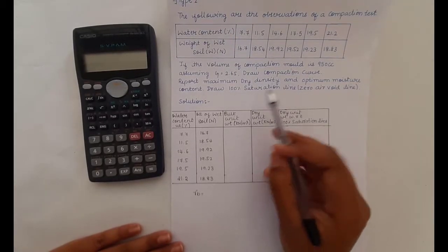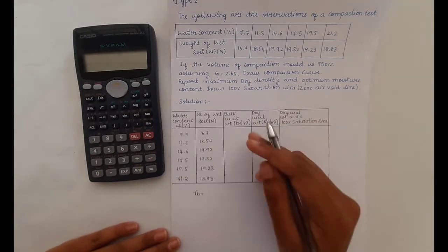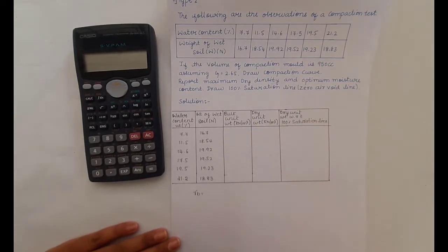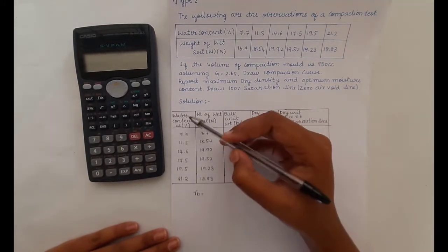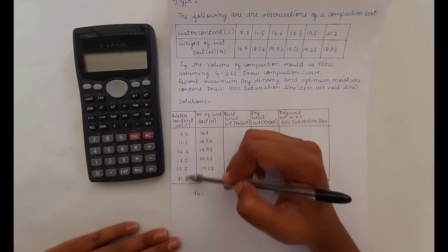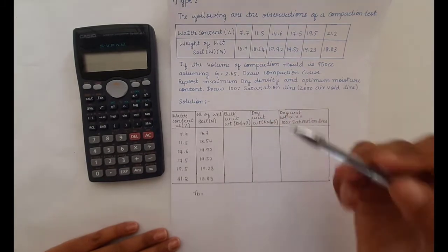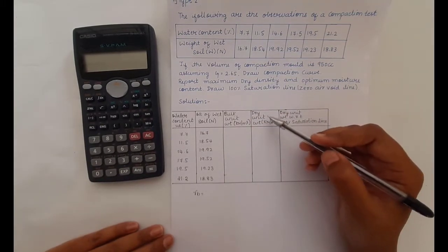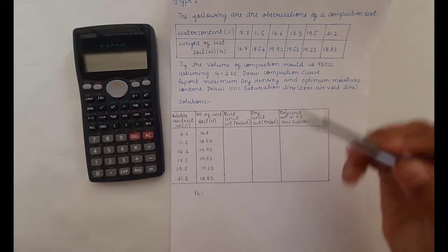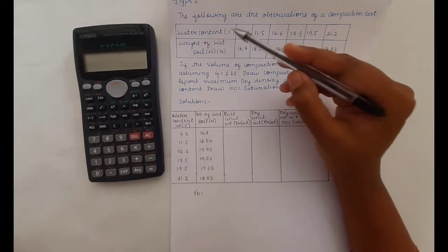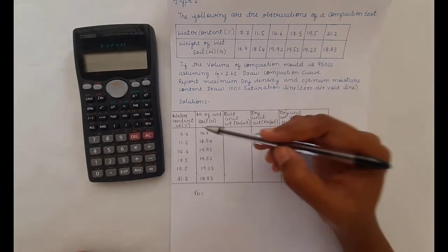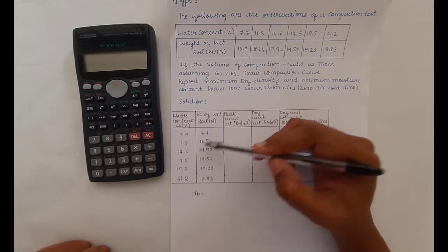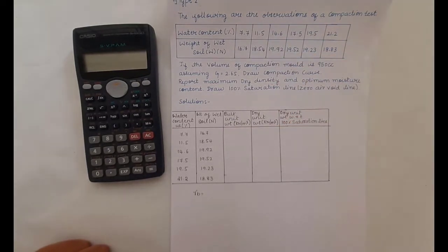Before plotting the graph for compaction, we will first do the calculations. For compaction, the x-axis has water content and the y-axis has dry unit weight. Here they have given only the water content and weight of the soil sample — so for each trial they have given the weight.